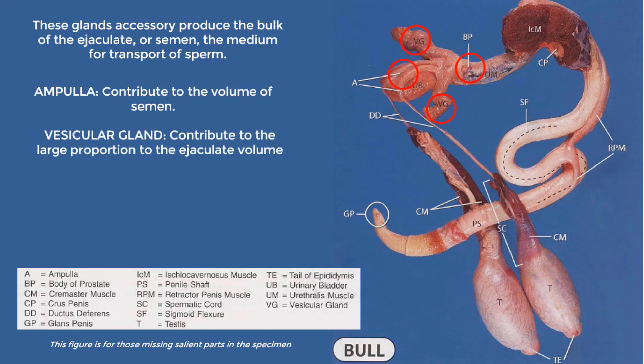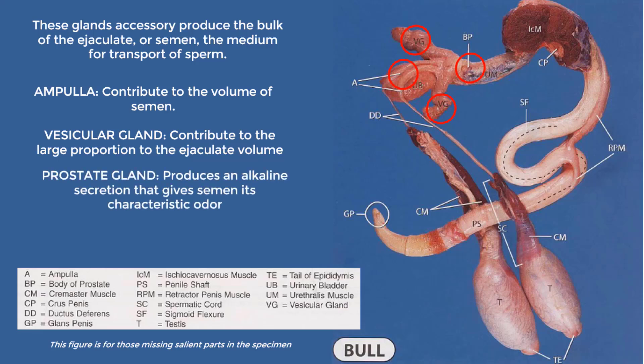The paired vesicular glands, formerly known as seminal vesicles, are lobulated glands that contribute a large proportion to the ejaculate volume. The unpaired prostate gland produces an alkaline secretion that gives semen its characteristic odor. Lastly, the bulbourethral gland, also known as Cowper's gland, produces the gel fraction of the ejaculate.